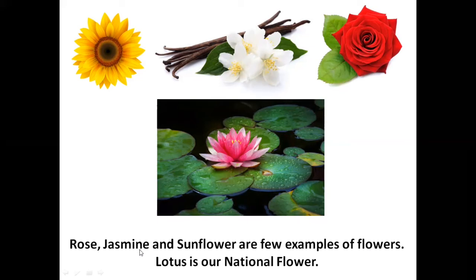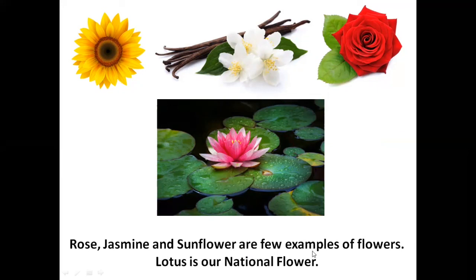Rose, jasmine, and sunflower are a few examples of flowers. Lotus is our national flower. Children, the flowers you see here are a few examples of flowers. During the topic of national symbols, we learned that lotus is our national flower. Repeat after me: Rose, jasmine, and sunflower — and lotus is our national flower.